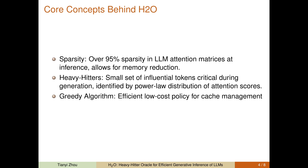At the core of H2O are three pivotal concepts. First, we capitalize on the inherent sparsity of attention matrices in large language models, which are over 95% sparse at inference. This sparsity presents a significant opportunity for memory reduction. Second, our focus on heavy hitters — a small set of influential tokens — is crucial. These tokens follow a parallel distribution in attention scores and are key during generation. Finally, we employ a greedy algorithm for efficient cache management, pivotal in maintaining system performance.